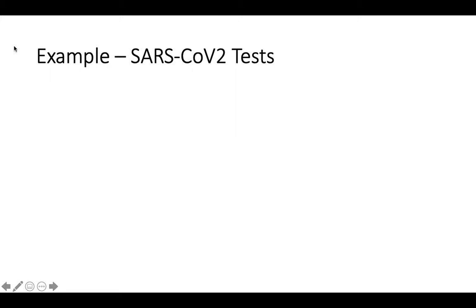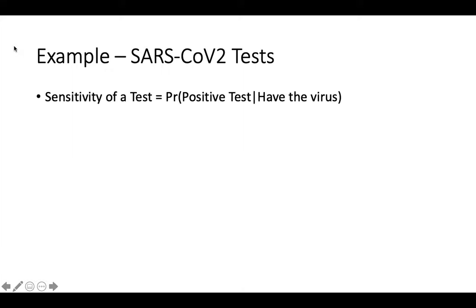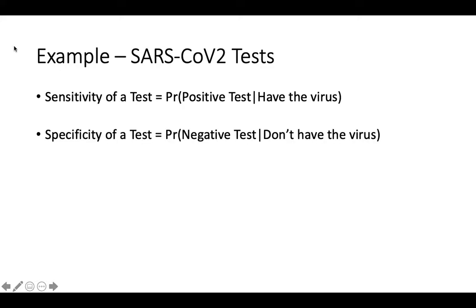To see how Bayes' Rule works, we will consider some examples using tests for the novel coronavirus known as SARS-CoV-2. There are a couple of important terms to understand when examining the accuracy of tests like these. The first term is the sensitivity of a test, which tells you the probability that you will have a positive test result if you have the virus. The next term is the specificity of a test, which tells you the probability that you will have a negative test result if you don't have the virus.